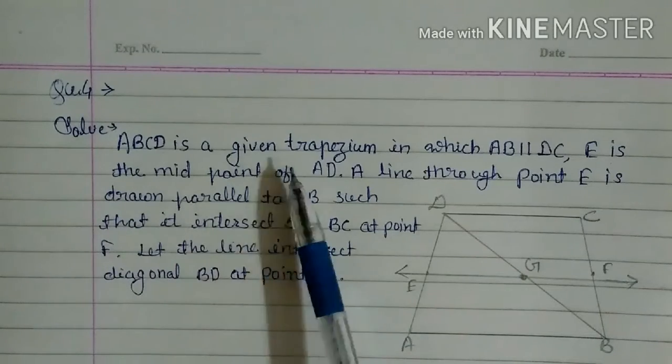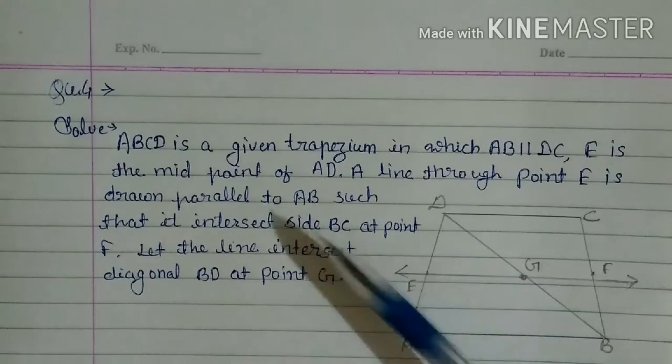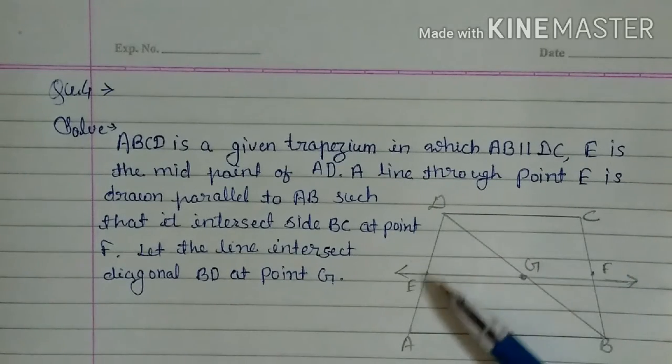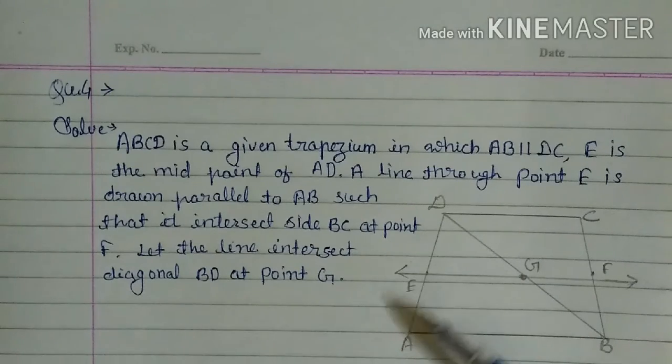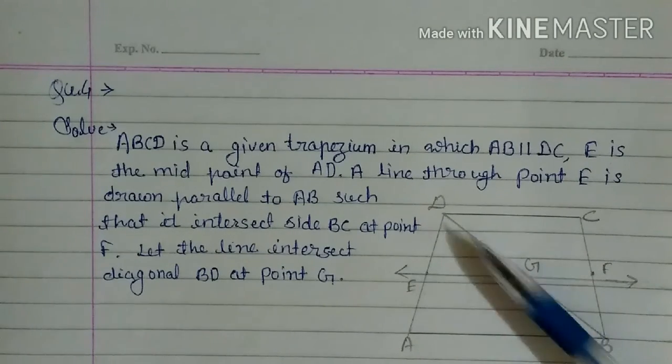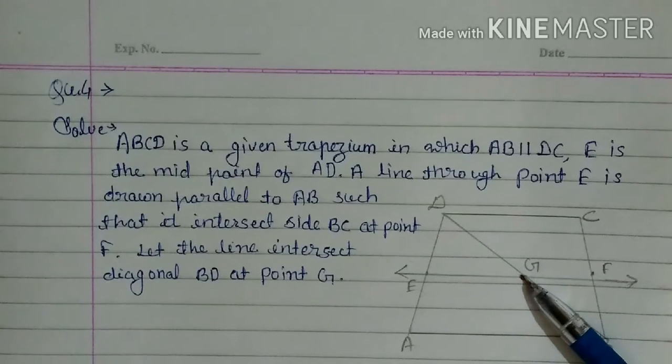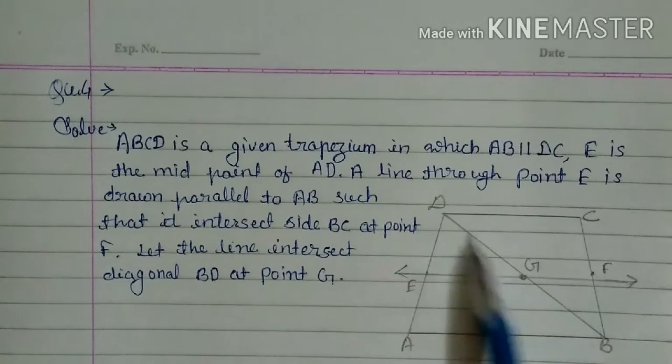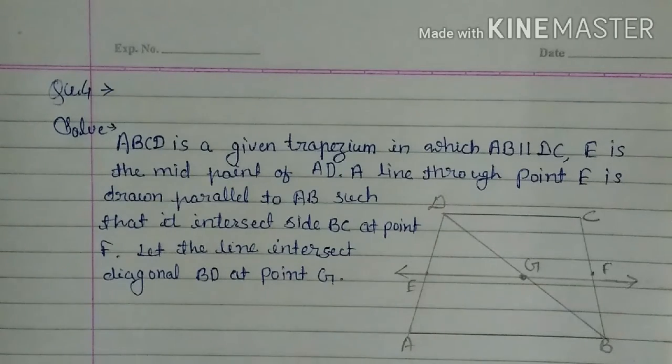Now here you see in this figure, ABCD is a given trapezium. This is all given in the question, in which AB parallel DC, E is the midpoint of AD such that it intersects side BC. This E is intersecting BC at point F. So let the line intersect diagonal BD at point G. This line intersects diagonal BD at G.